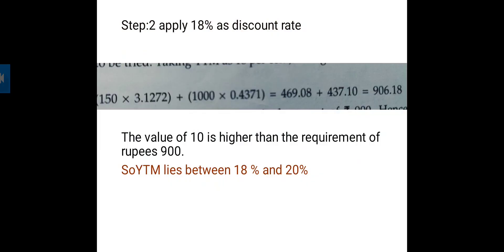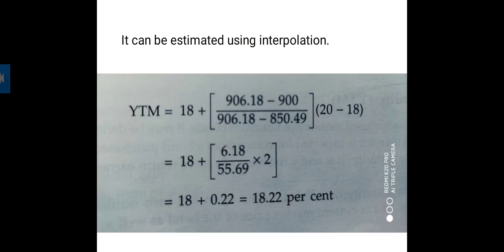Using interpolation, the formula is: lower rate plus (market price minus higher value) divided by (higher value minus lower value), multiplied by (higher rate minus lower rate). This gives the yield to maturity as 18.22%. So this is the method of calculating yield to maturity — it is essentially the internal rate of return.